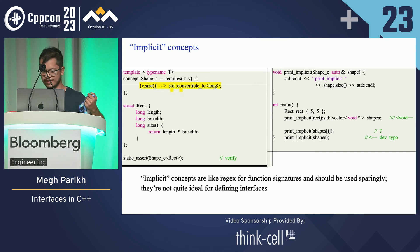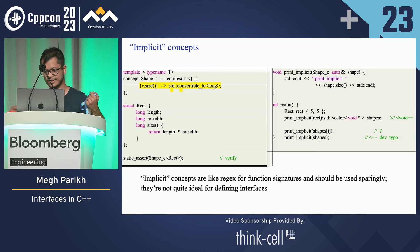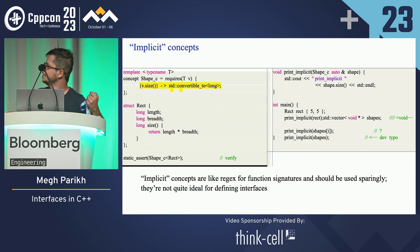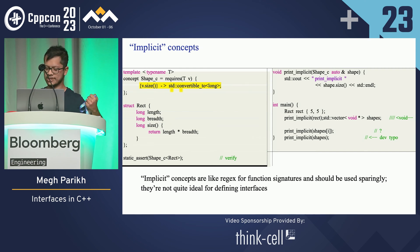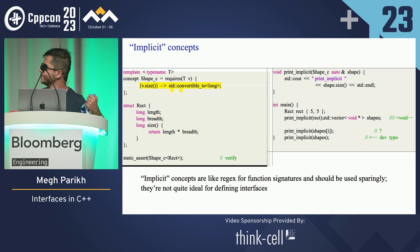So we say that if it has a size method which is convertible to a long, it's a shape. And we can see that it works for a rectangle, but what happens when we try to store it dynamically in a vector? What happens if we make a typo and pass in the vector itself instead of an object of the vector?